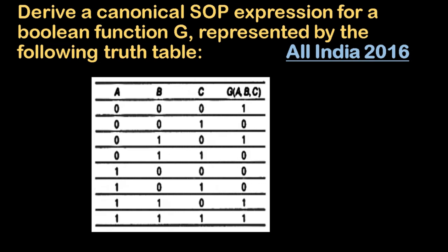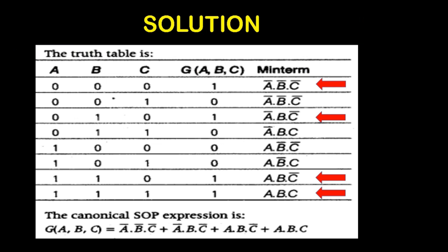Now we will see how to find the solution to this problem. In the solution, I am taking the truth table values of A, B, C — writing all eight combinations from 0 to 7. G is the output value with input variables A, B, and C. In the question, the output is mentioned as 1, 0, 1, 0, 0, 0, 1, 1. Now we have to find out the min terms, so I am writing the min terms.